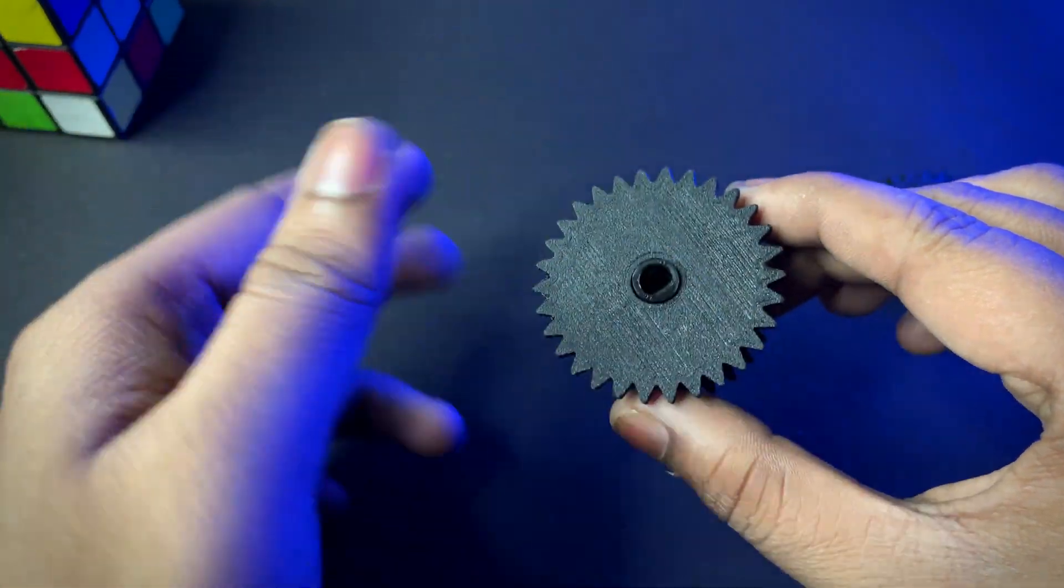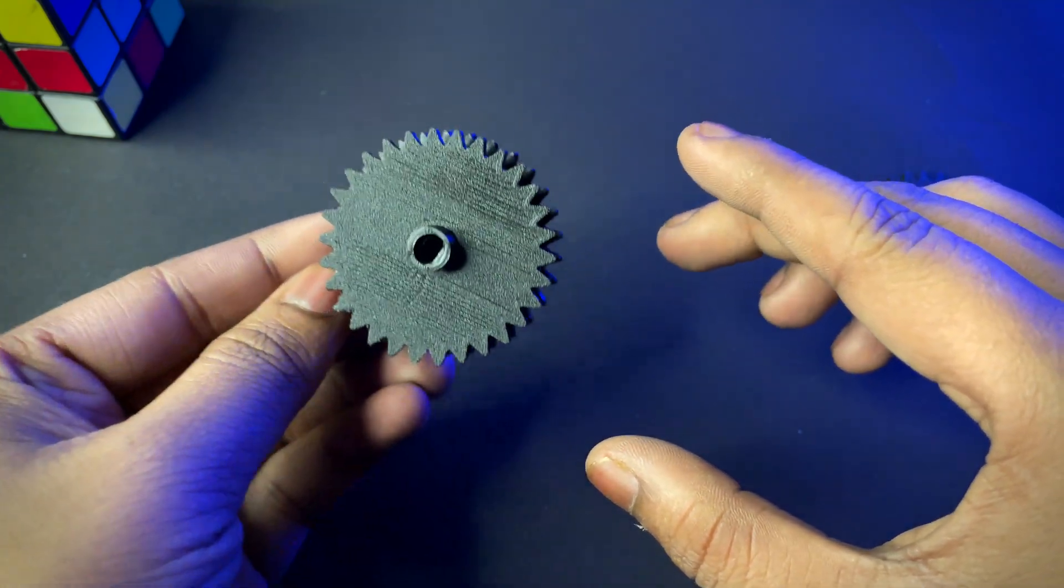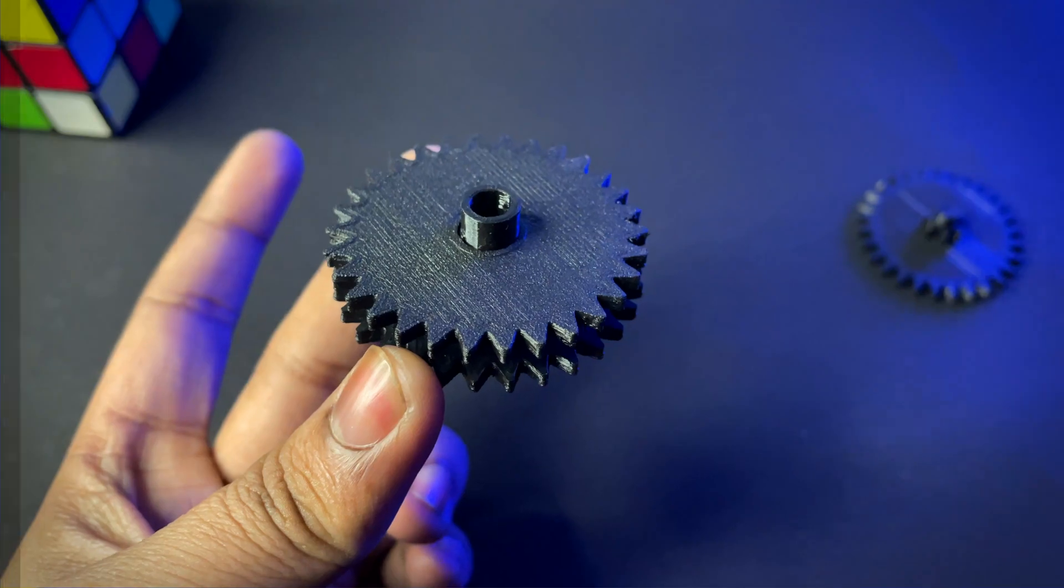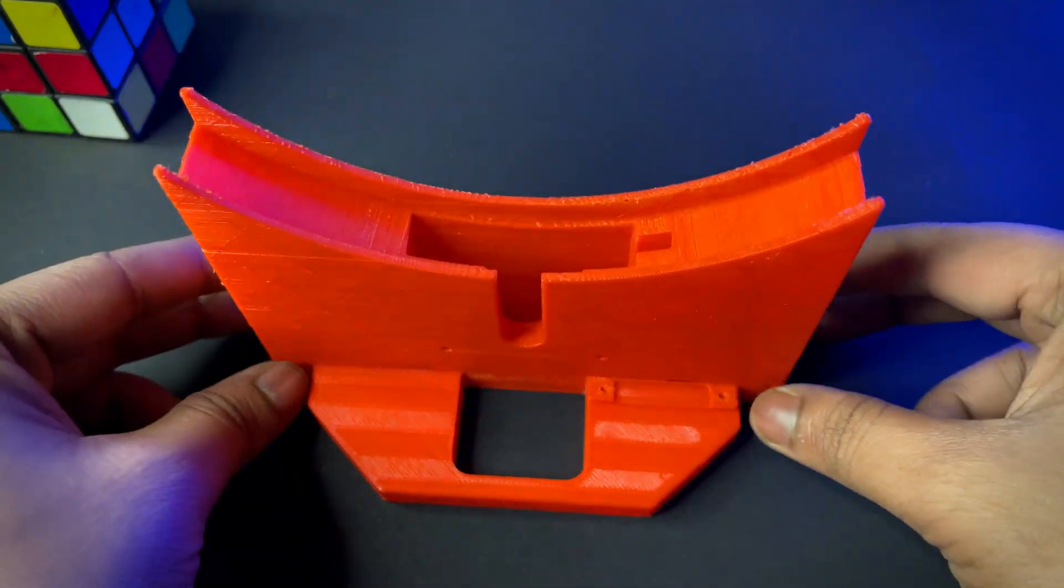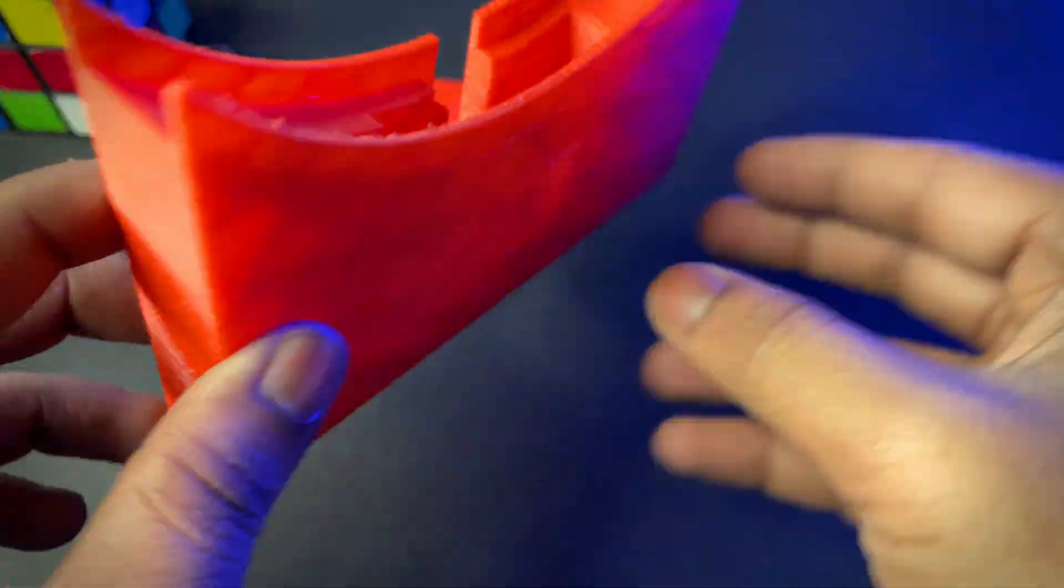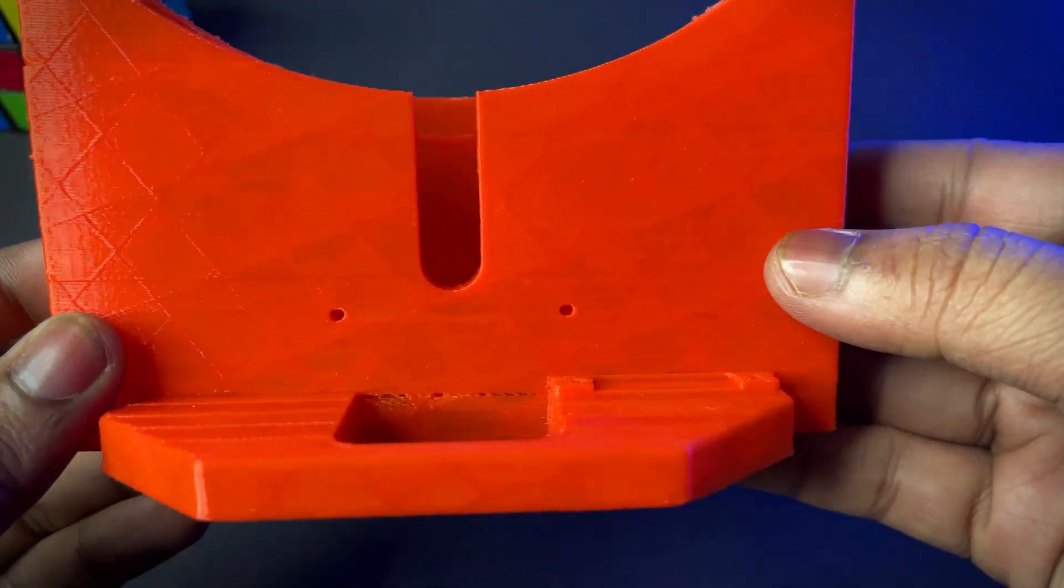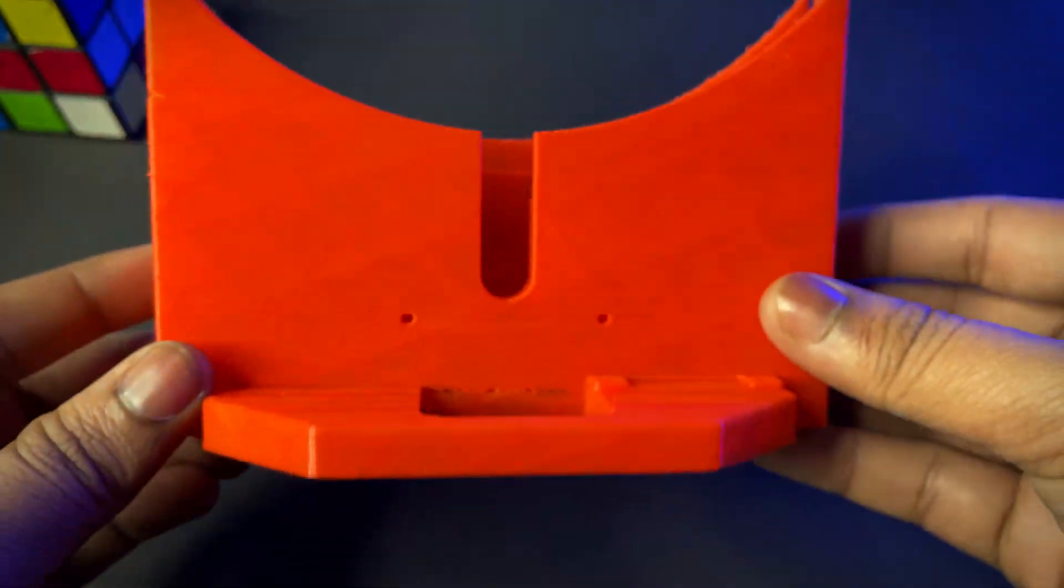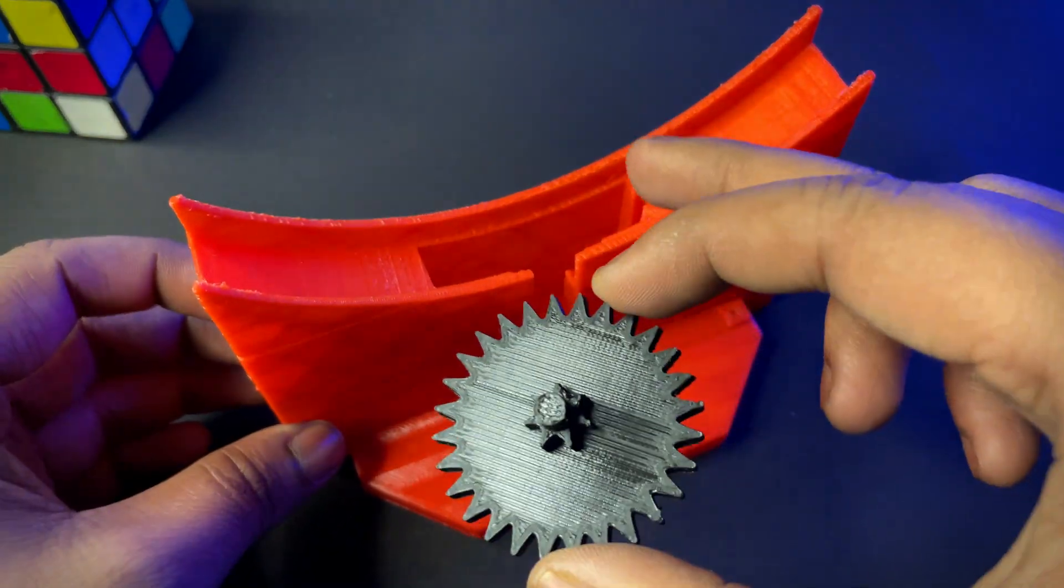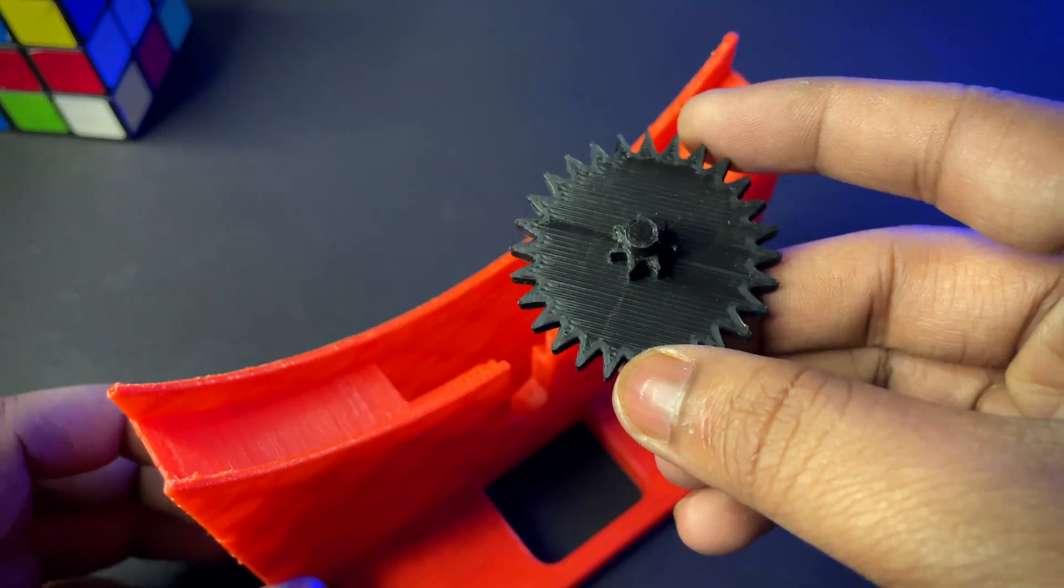Now put this gear like this. This is the base of the clock. Now take this gear and put it inside this hollow space.